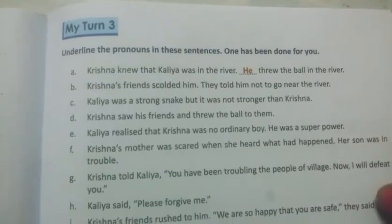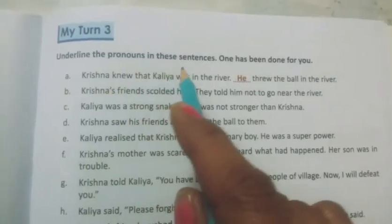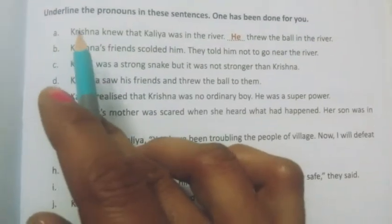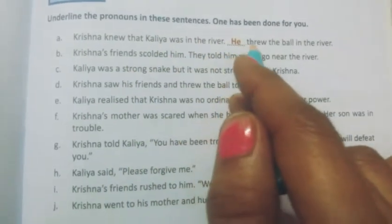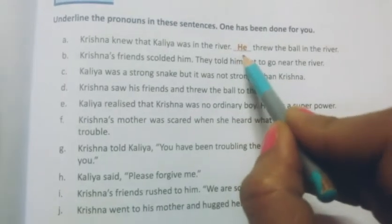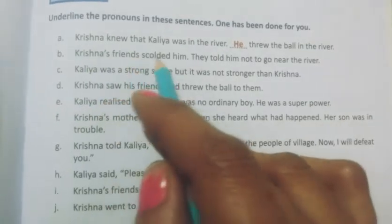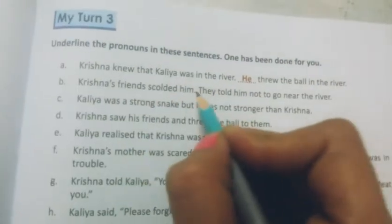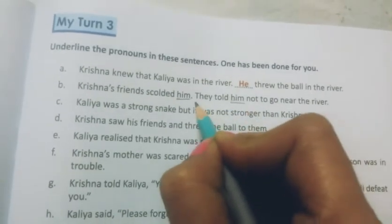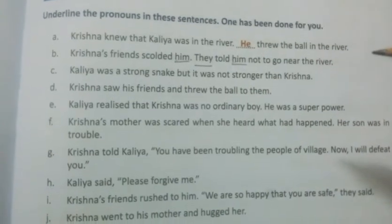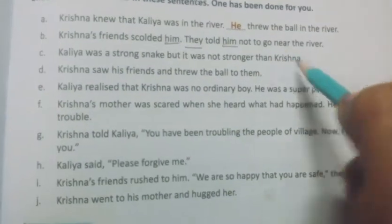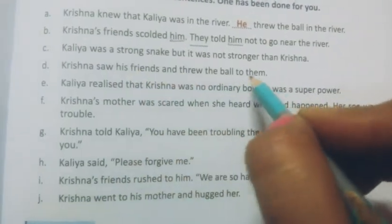The next exercise is My Turn 3 from your practice book, volume two: Underline the pronouns in the sentences. One has been done for you. First sentence: Krishna knew that Kalia was in the river. He threw the ball in the river — 'he' is the pronoun, so underline it. Next: Krishna's friends scolded him. They told him not to go near the river. Here 'him' and 'they' and 'him' are the pronouns — underline all of them. Next: Kalia was a strong snake but it was not stronger than Krishna.